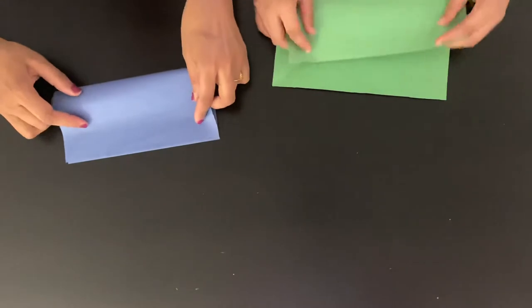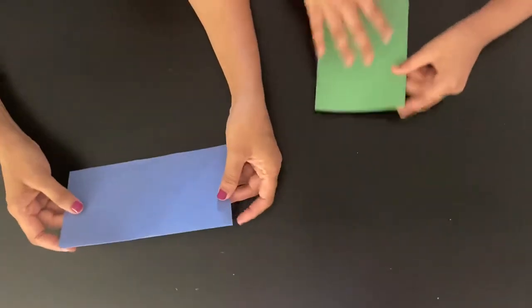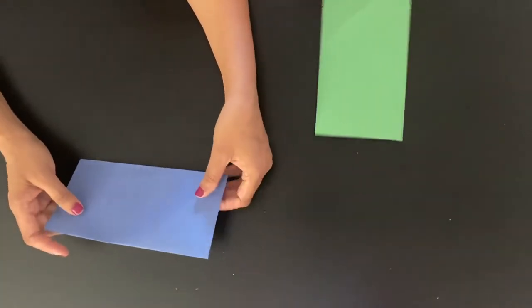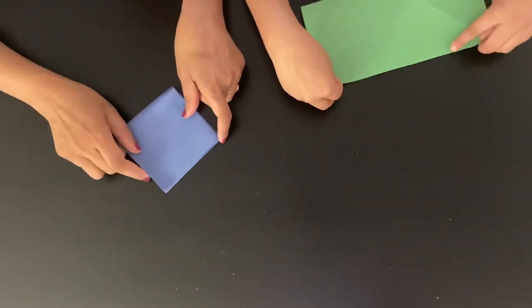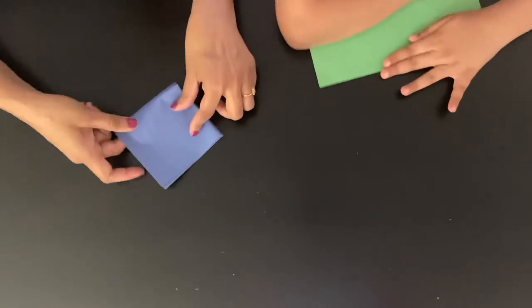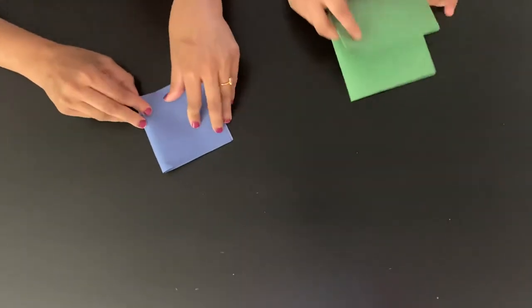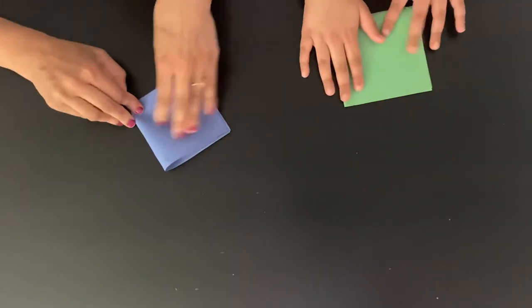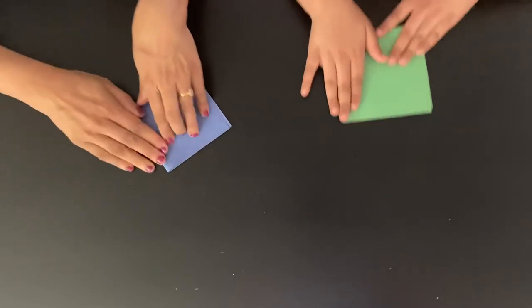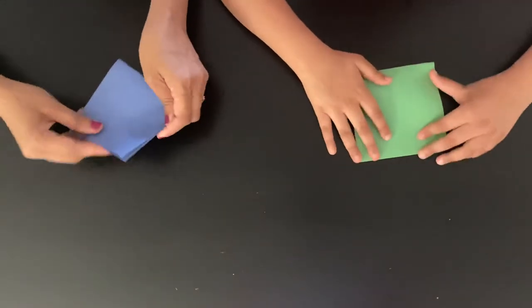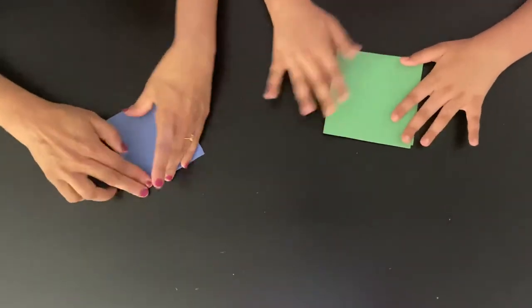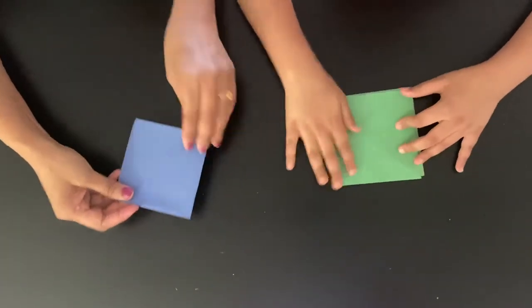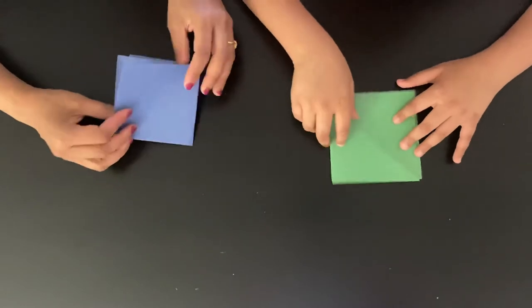First we will fold it in half like a hot dog bun. Then we'll again fold it in half. So this is our second half fold. You can see here I have made a second fold.